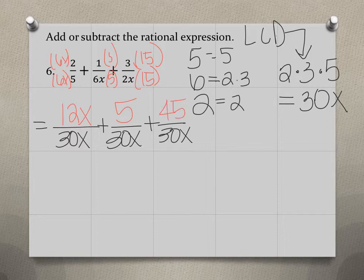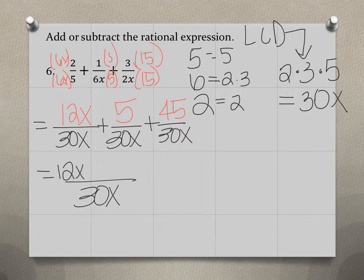So now we have the same denominators. So we're going to keep that denominator and we're going to add the top that we see here. So we have 12x plus 5 plus 45.